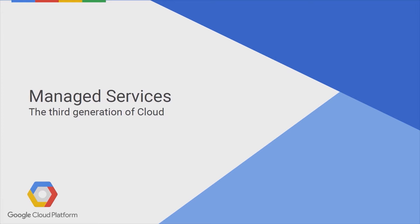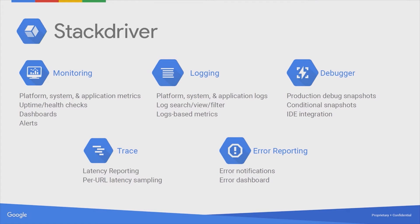We have been talking about the third generation of cloud — from Google's point of view, first generation would be just hardware colocation. Second generation of cloud would be virtualization: virtual machines and load balancers in the cloud. And then the third generation is about using services provided by your cloud provider. This is where we have been at Google for several years now, using our own internal services. Today I'm going to focus on just two of them.